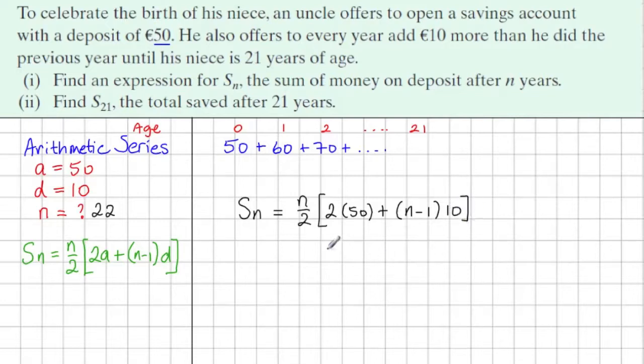Okay, and now we're just neatening this up, just multiplying it out. And I'm going to do this a little bit quickly here. So we're getting 100 plus 10N minus 10.